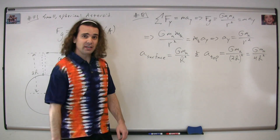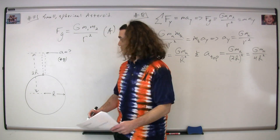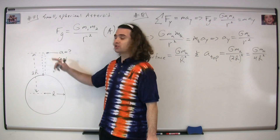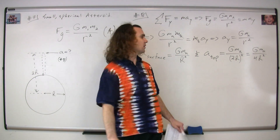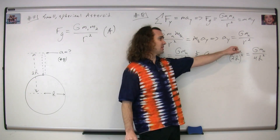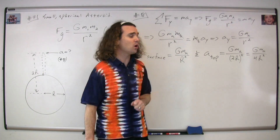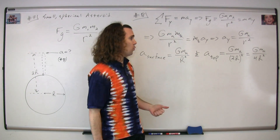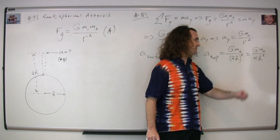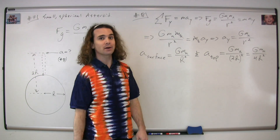Now we need to figure out the acceleration at the very top. The only thing that changes is the distance between the center of masses of the two objects, which is equal to 2r. Therefore, the acceleration at the top is going to be big G times the mass of the asteroid divided by the quantity (2r) squared, giving us big G times the mass of the asteroid divided by 4r squared.